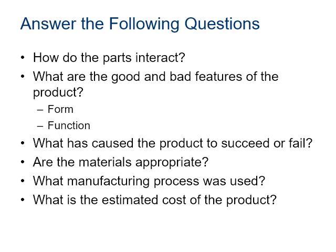As we work through product disassembly, we need to keep in mind important questions: How do the parts interact? What are the good and bad features of the product? Following this final piece of reverse engineering, we look at how we could make the product better — what caused it to succeed or fail, whether the materials are appropriate, what manufacturing process was used, and what about cost? We need to be making a profit if we want to stay in business.